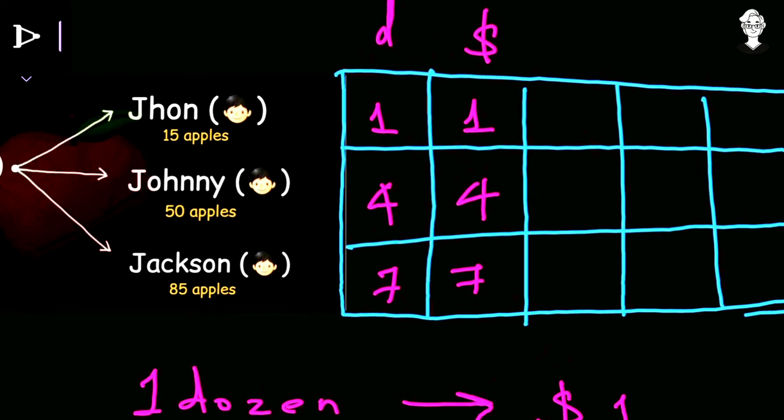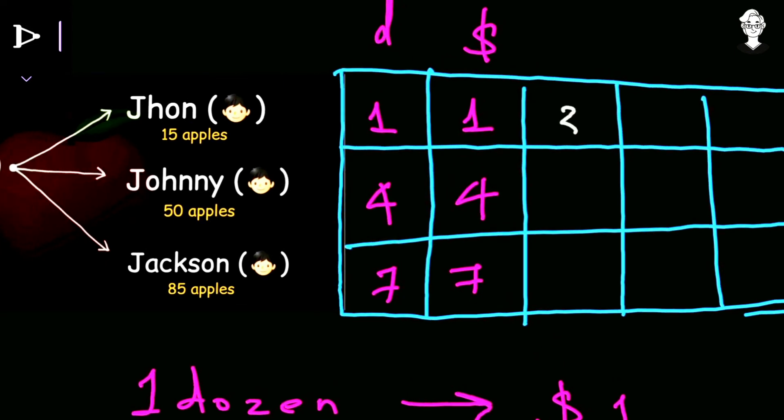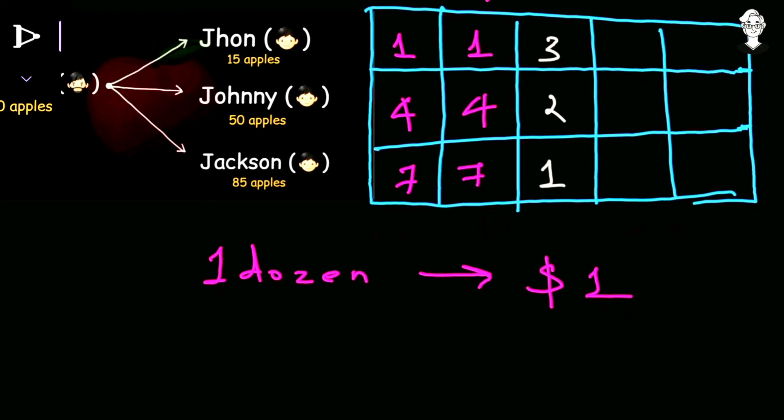Now let us discuss the remaining apples. As John has sold 12 apples, he's having 3 apples left. Johnny has 2 left and Jackson has 1 left. Now they have to sell these remaining apples, so now they have to change the price. Now they will keep the price as $3 for one apple.